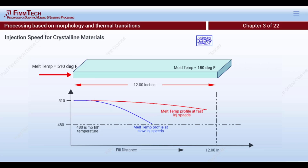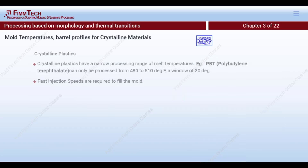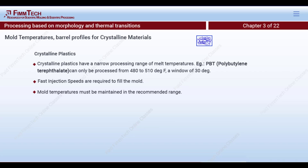We need to inject the plastic at a rate such that it stays molten all the way to the end of fill. Therefore, injection speeds are relatively faster for crystalline materials. Mold temperatures must also be maintained in the recommended range so that crystallites form properly and we don't have any built-in stresses inside the part.